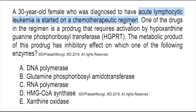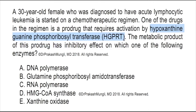One of the drugs used in this disease is a pro-drug — take note of that. This is a pro-drug, and it is activated by the enzyme hypoxanthine guanine phosphoribosyltransferase (HGPRT). The question asks about the metabolic product of this pro-drug and its inhibitory effect. Let's first find out what this drug actually is.